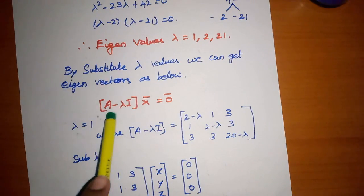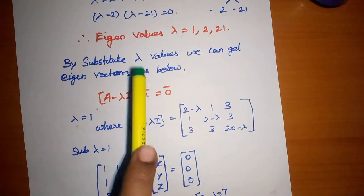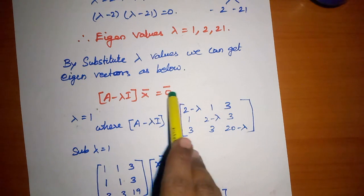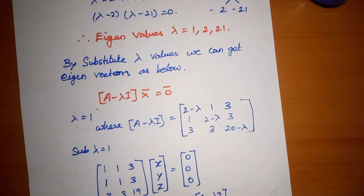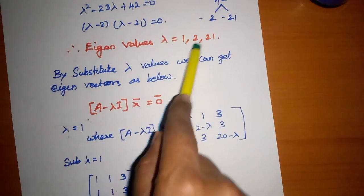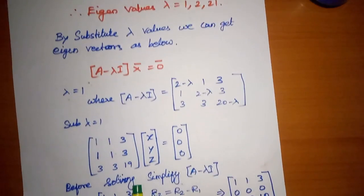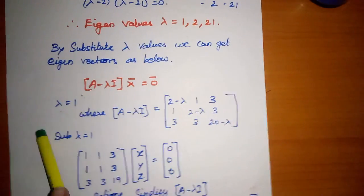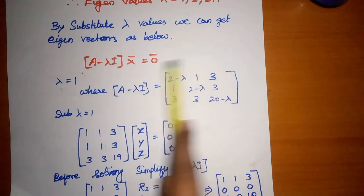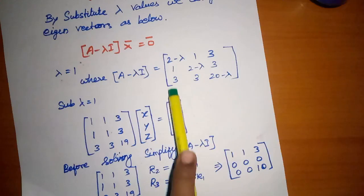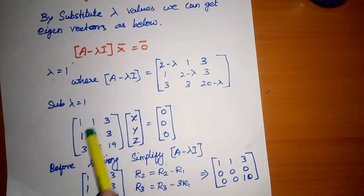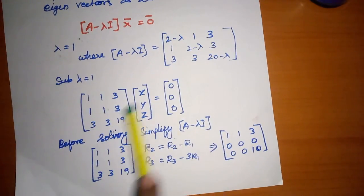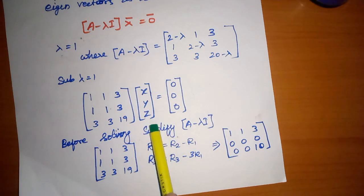To find eigenvectors, use (A minus lambda I) times X-bar equals zero, where X-bar is the column matrix [x1, x2, x3]. For each lambda value, substitute and solve for x, y, z. For lambda 1 equal to 1, substitute lambda equals 1 into A minus lambda I. The diagonal elements become 2 minus 1 = 1, 1, 2 minus 1 = 1, 3, 2 minus 1 = 1, giving matrix rows [1,1,3], [1,1,3], [3,3,19].